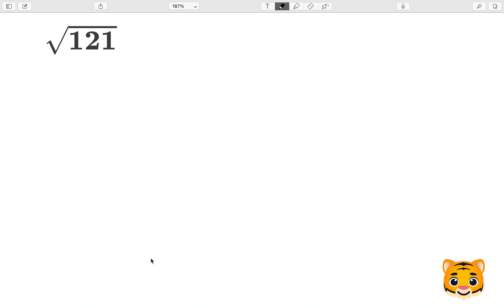However, in this example, this is an exception because 121 is a perfect square. A perfect square is a value that if you take the square root of that perfect square, you will obtain, as your output, a whole number.